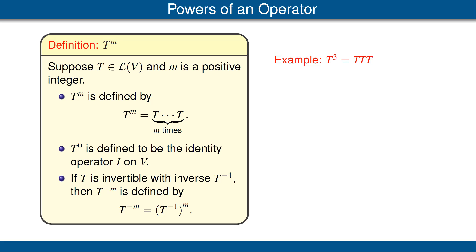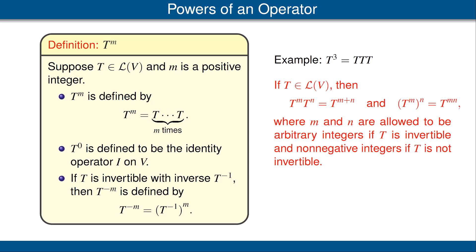As an example, T cubed means T times T times T. Suppose T is a linear operator on V. Then T to the M times T to the N equals T to the M plus N, and T to the M raised to the Nth power equals T to the MN power, where M and N are arbitrary integers if T is invertible and non-negative integers if T is not invertible. You should verify these easy equalities; they follow immediately from the definitions.